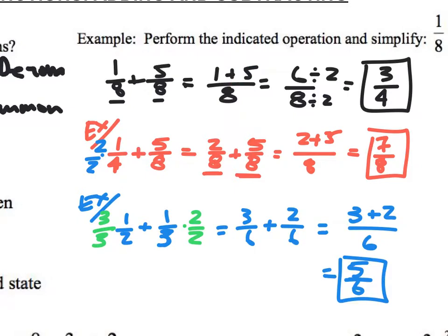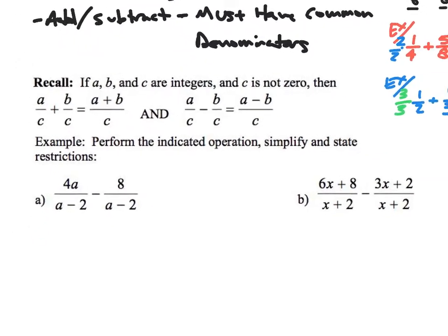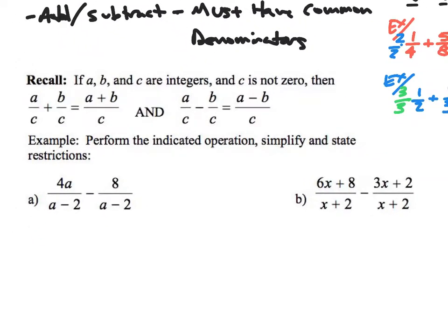When adding and subtracting fractions, sometimes you already have a common denominator and can just add the numerators. Sometimes one denominator needs to be converted to match the other. When you have completely non-common denominators, the trick is to multiply each fraction by the opposite denominator to get a common denominator. Now we're going to do the exact same thing but with algebraic expressions as our denominators instead of just numbers.